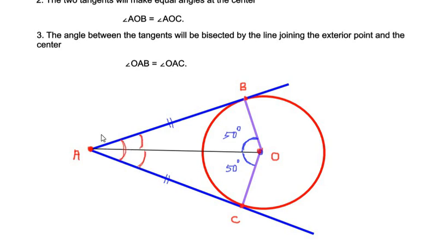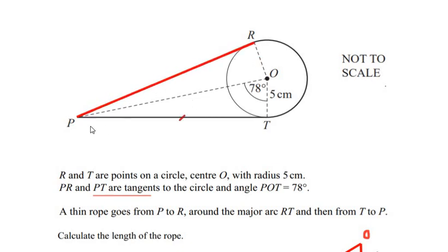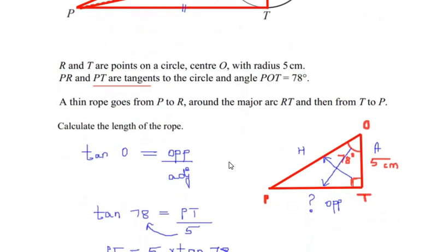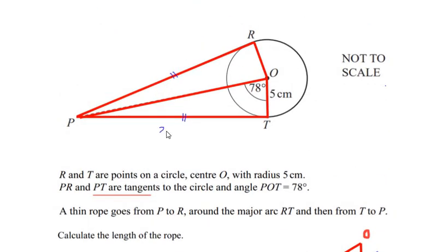For example, if the total angle between the tangents is 80 degrees, the line joining the external point to the center divides it into 40 degrees and 40 degrees. Applying this to our problem: the exterior point is P, and PR and PT are the two tangents. Since PT = 23.523 centimeters, by the Two Tangent Theorem PR is also 23.523 centimeters. Also, since angle POT is 78 degrees, angle POR is also 78 degrees.